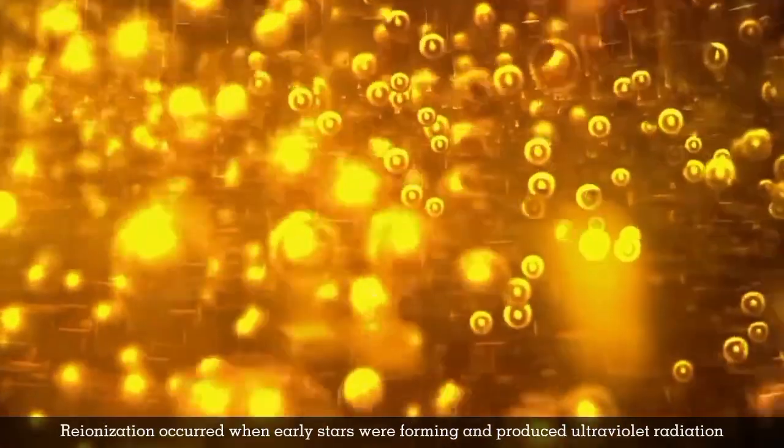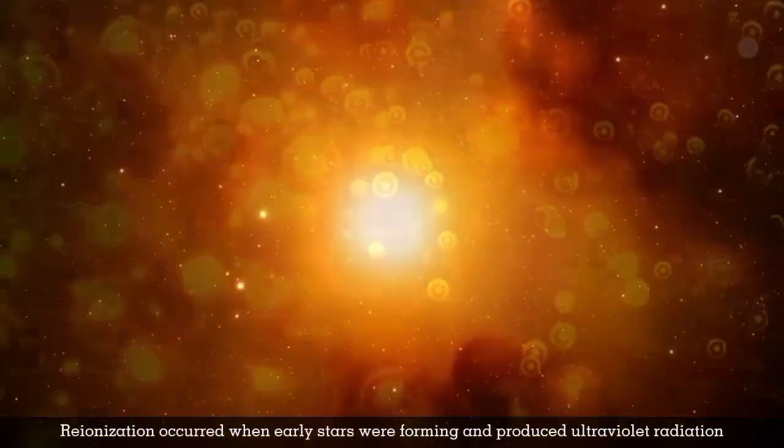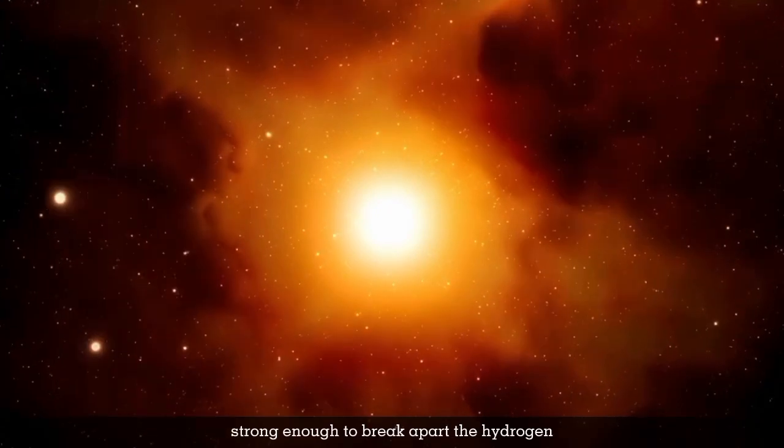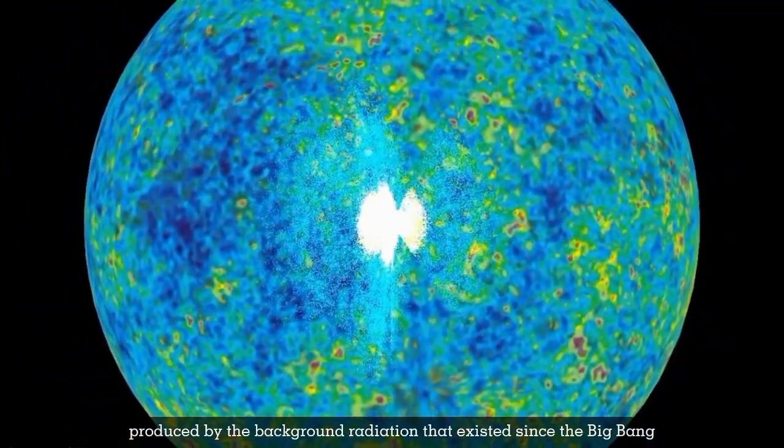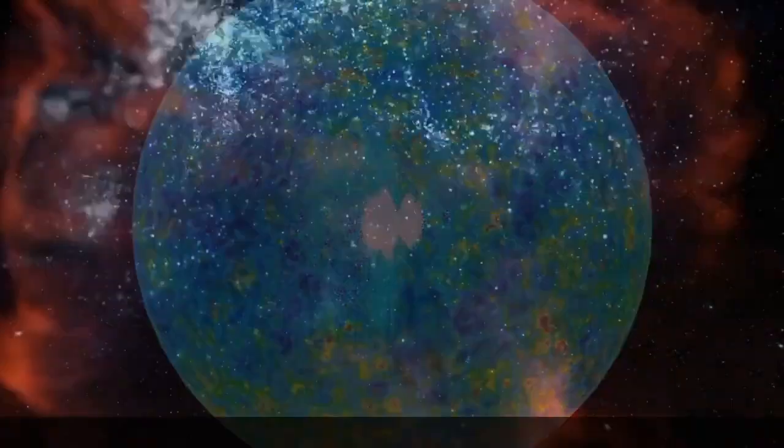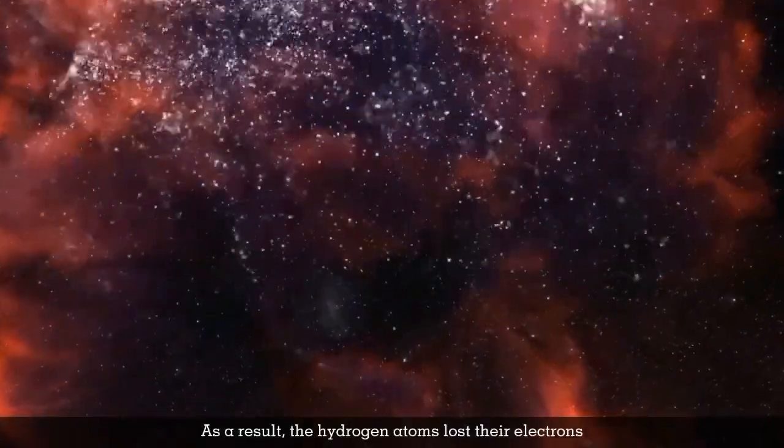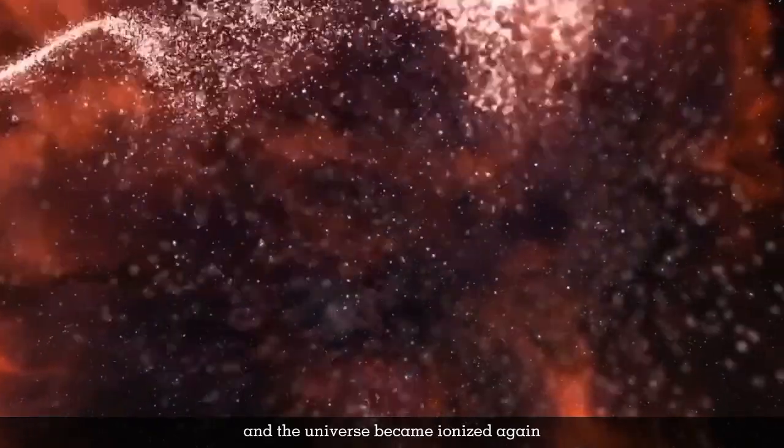Reionization occurred when early stars were forming and produced ultraviolet radiation, strong enough to break apart the hydrogen produced by the background radiation that existed since the Big Bang. As a result, the hydrogen atoms lost their electrons and the universe became ionized again.